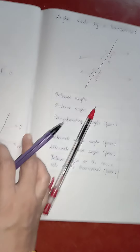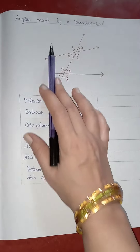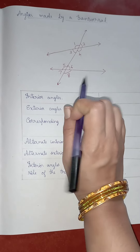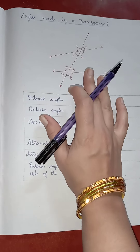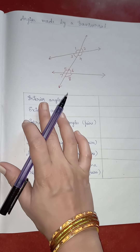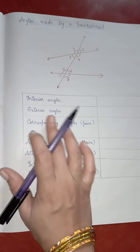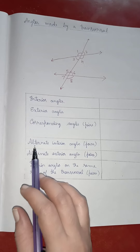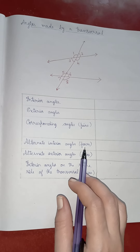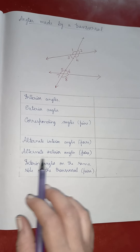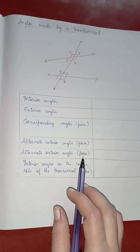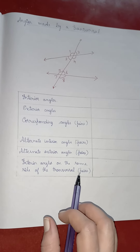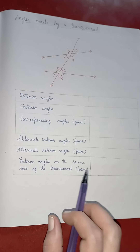Now let us see what are the different angles formed by a transversal when it cuts the two given lines. The different kinds of angles formed are: interior angles, exterior angles, corresponding angles (which come in pairs), alternate interior angles (which also come in pairs), alternate exterior angles (which come in pairs), and interior angles on the same side of the transversal (which also come in pairs).